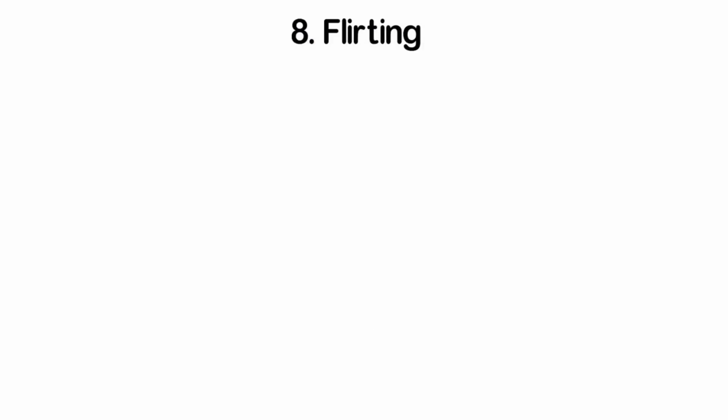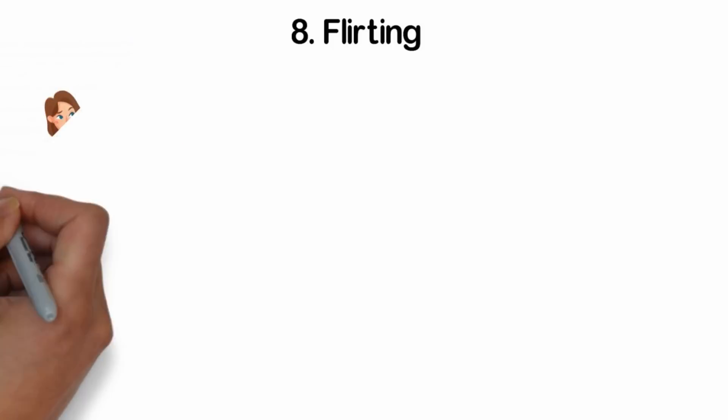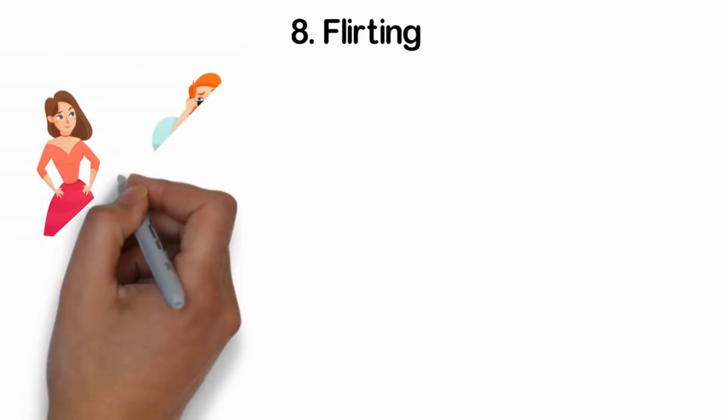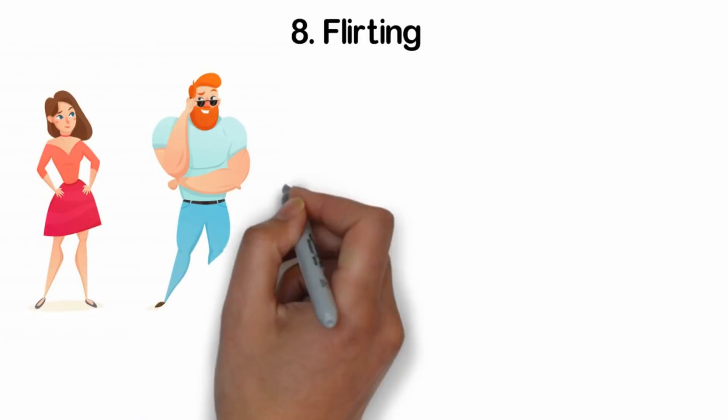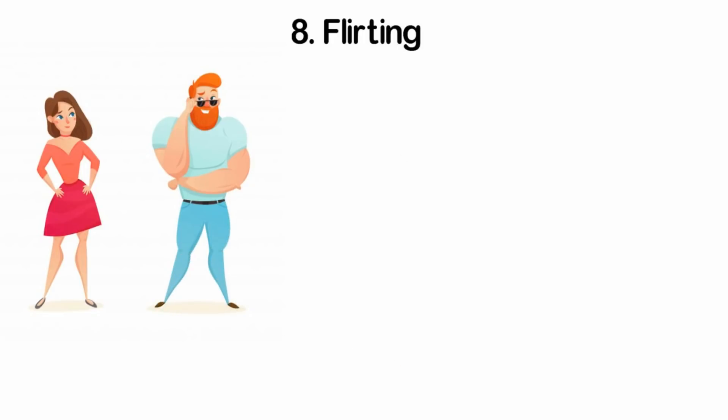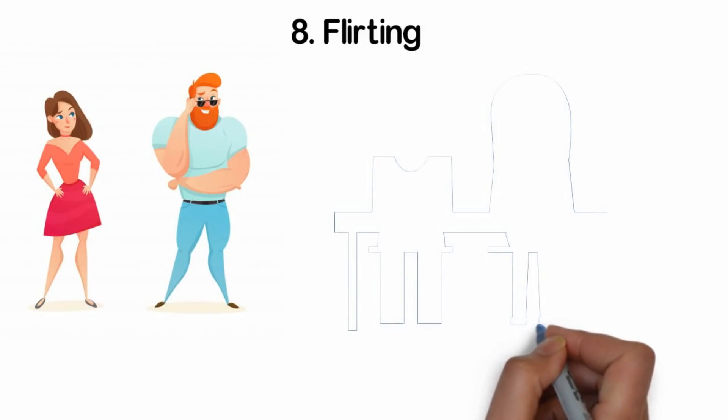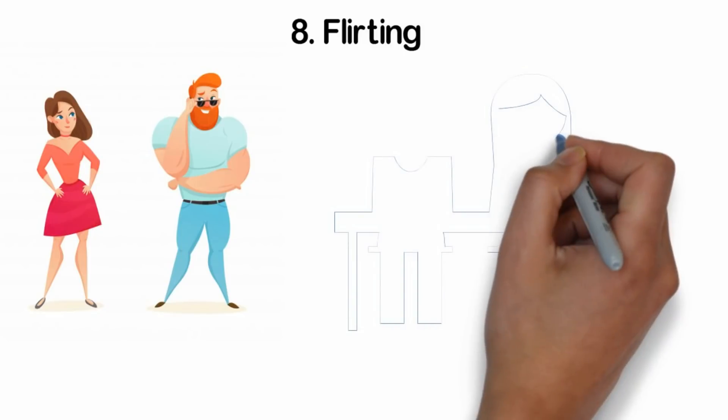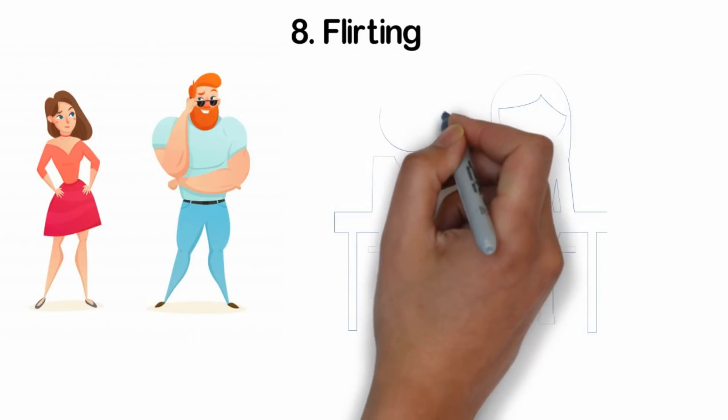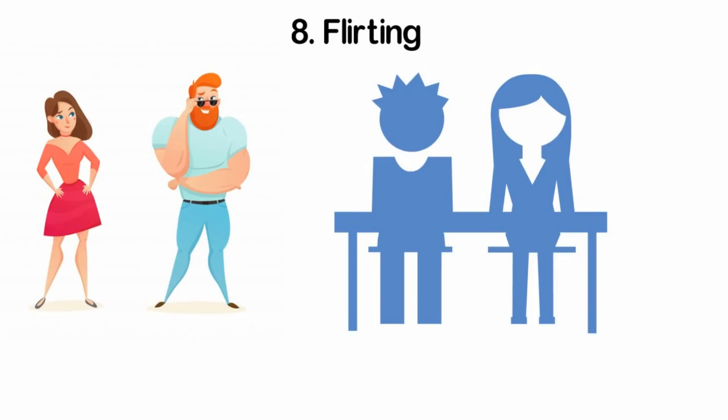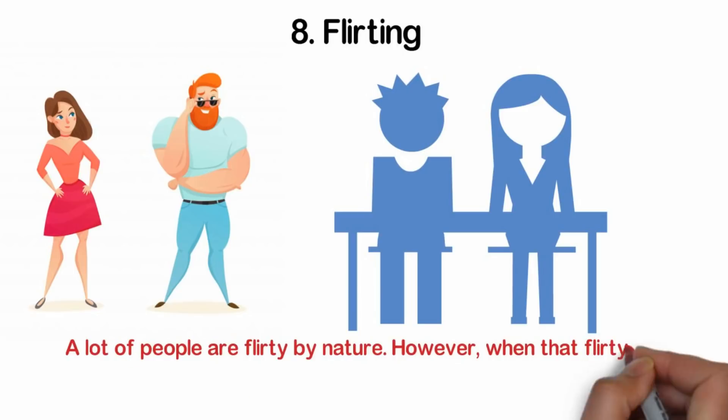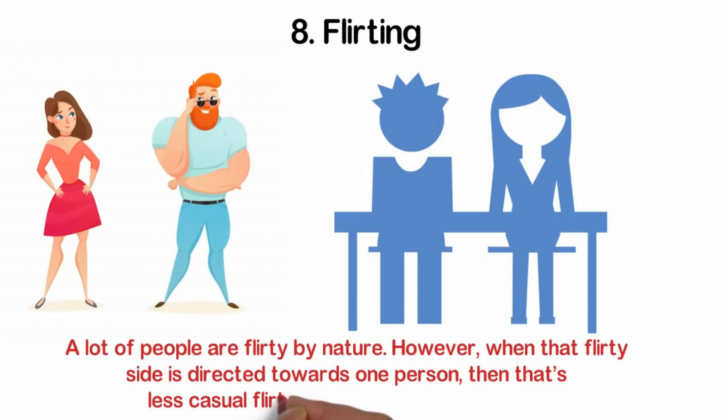Number eight, flirting. As far as signs go, if someone is flirting with you, they obviously have to like you quite a bit. Do all your conversations take this flirty turn? Maybe you guys were talking about something boring, and she still managed to make the conversation turn to a flirty bit. To the point you are left wondering if she is serious or if she is just joking around. She could also be this flirty person, but if it is more towards you than other people, that's when you know something is going on here. A lot of people are flirty by nature. However, when that flirty side is directed towards one person, then that's less casual flirting and more actual attempt.